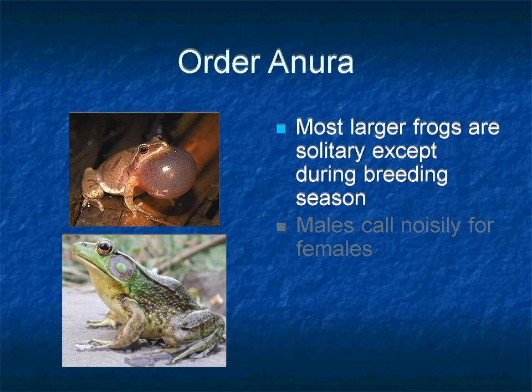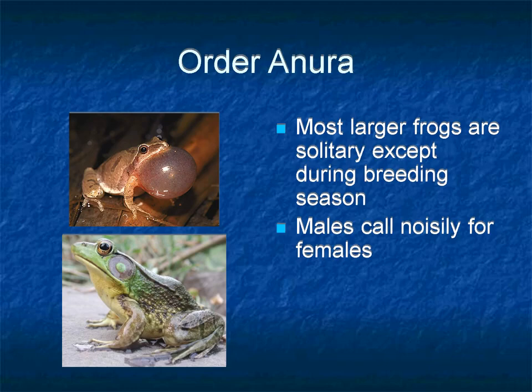Most larger frogs live alone during regular days, but during breeding season they try to find a mate. Males usually make very noisy calls for females during the breeding period. In the rest of the days, frogs are mainly silent and their presence cannot be detected until they are disturbed. A link related to their calls has been shared in the description.